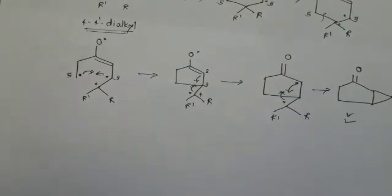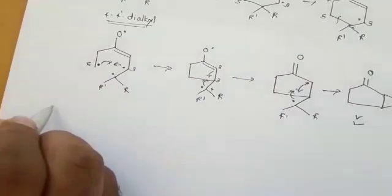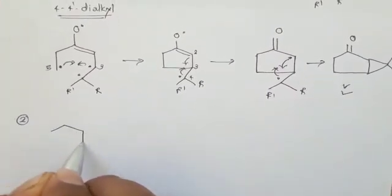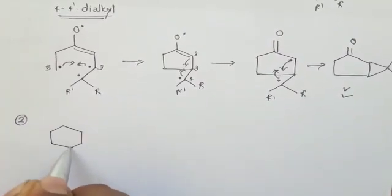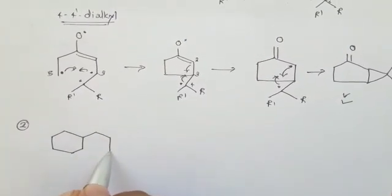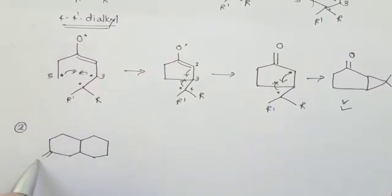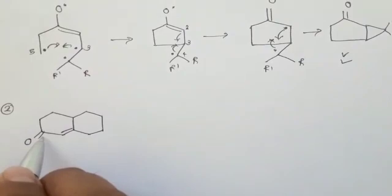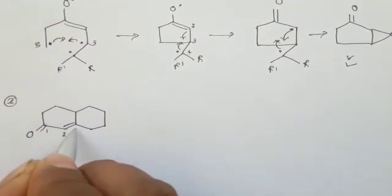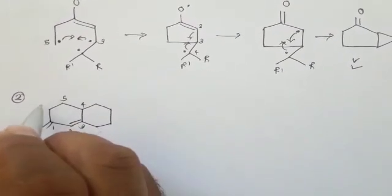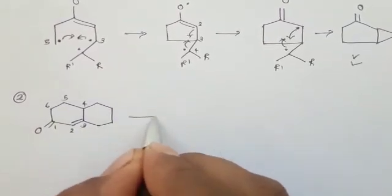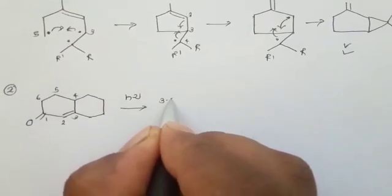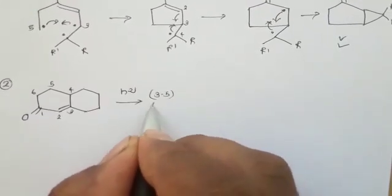We will now take the second example of the lumiketone rearrangement. This system has a carbonyl group and one double bond. The numbering is given as 1, 2, 3, 4, 5, and 6. As before, we first combine positions 3 and 5, and then positions 2 and 4.